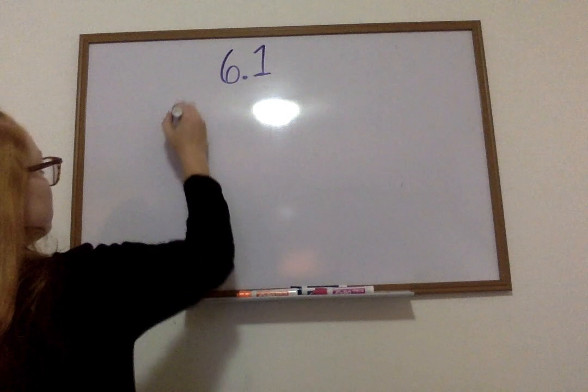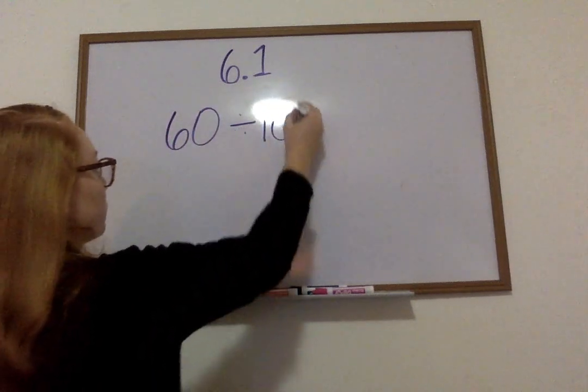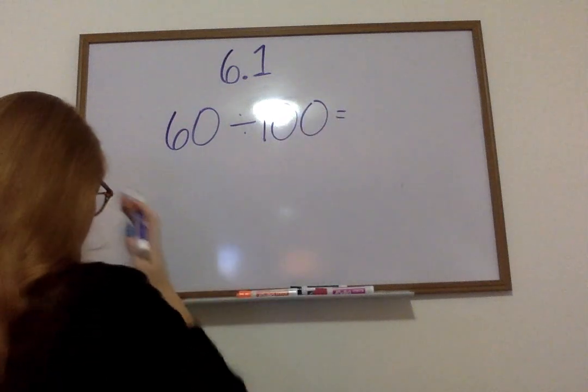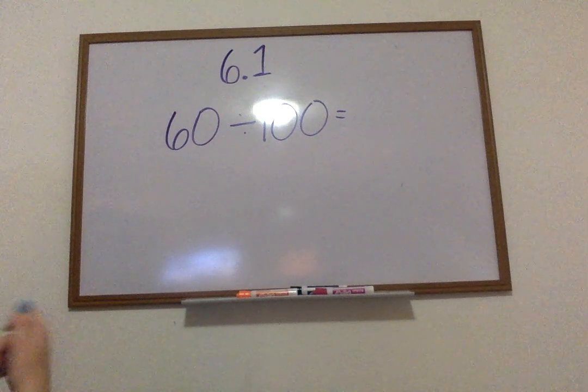60 divided by 100. So, we know that we are going to be dividing, and it's something like a 10, 100, 1000, everything. So, we know our decimal is going to go to the left.